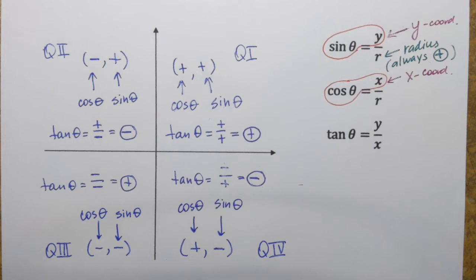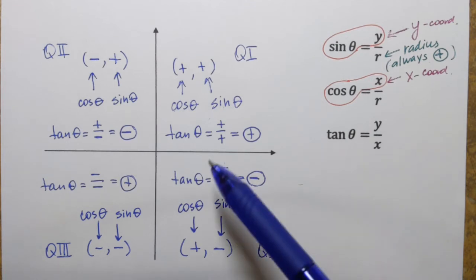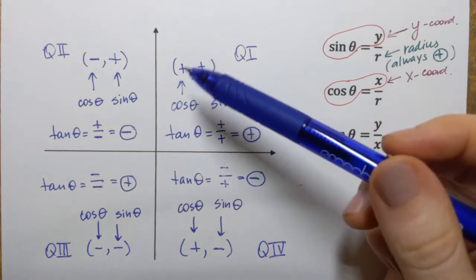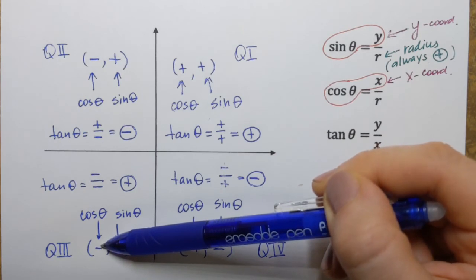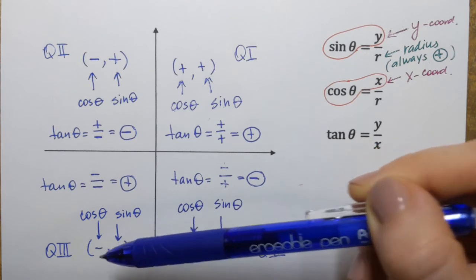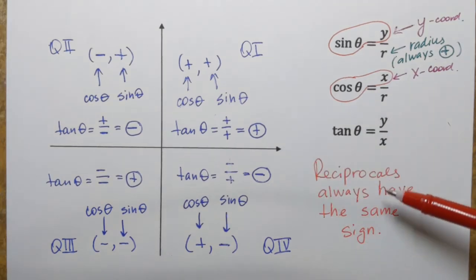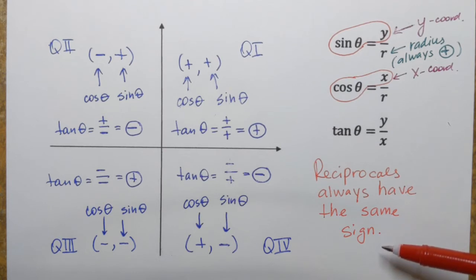We also have three reciprocal functions. The good news is that reciprocals always have the same sign. For example, 5 and its reciprocal 1/5 are both positive. Negative 2/3 and its reciprocal negative 3/2 are both negative. So knowing the signs of sine, cosine, and tangent is enough to determine the signs of the reciprocal functions. For instance, if cosine is negative in quadrant 3, then secant is also negative. If tangent is negative in quadrant 4, then cotangent is also negative.